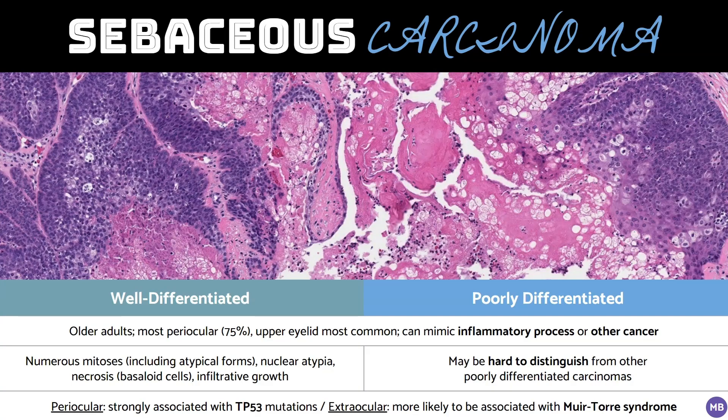Sebaceous carcinoma usually arises on the face of older adults, with the upper eyelid being the most common site. A well-differentiated sebaceous carcinoma may look benign at first glance. However, the presence of numerous mitoses including atypical forms, nuclear atypia, necrosis, and infiltrative growth should raise concern for malignancy.